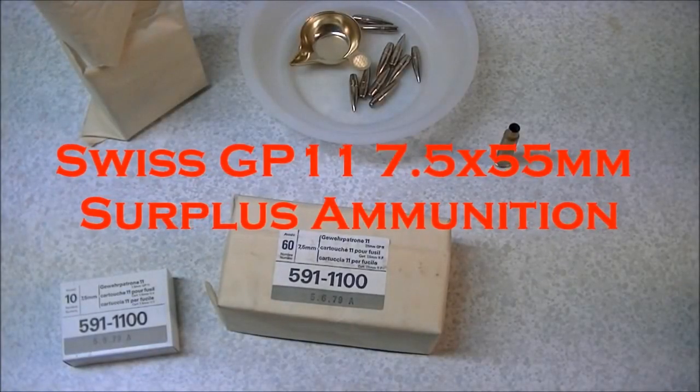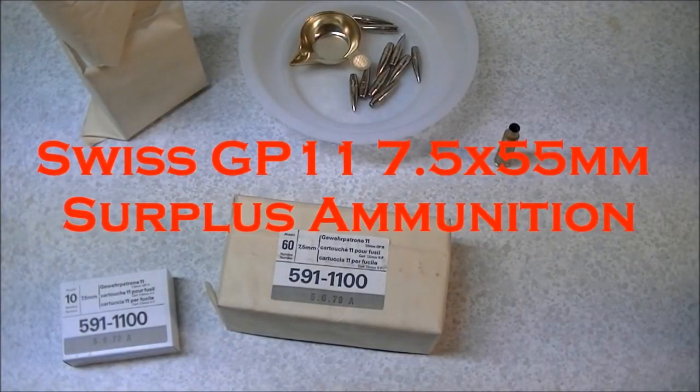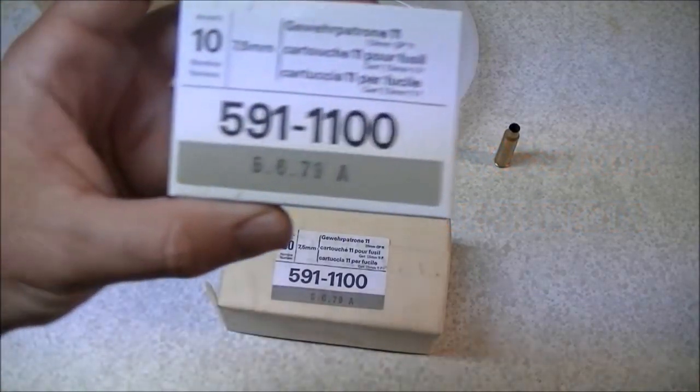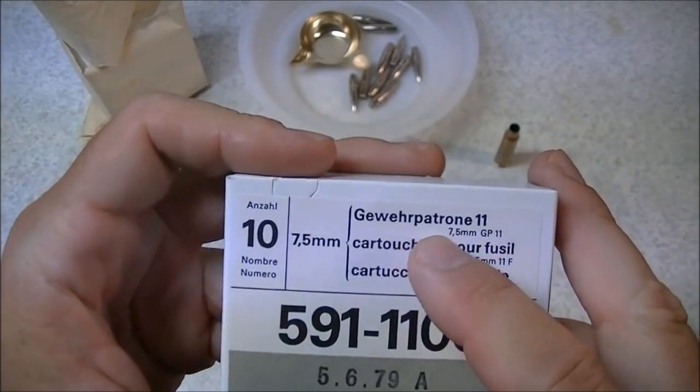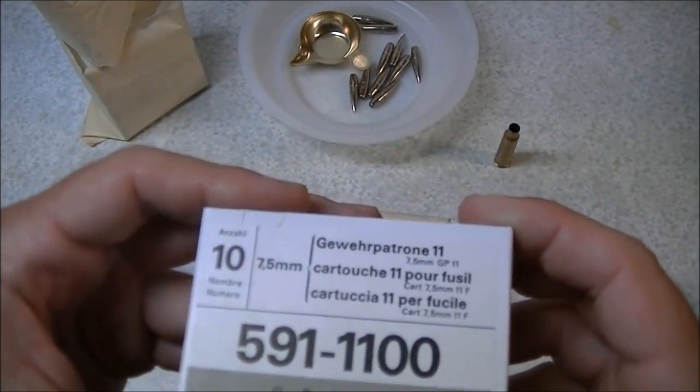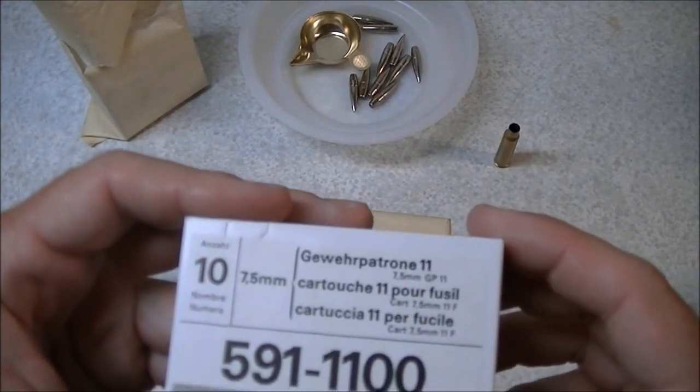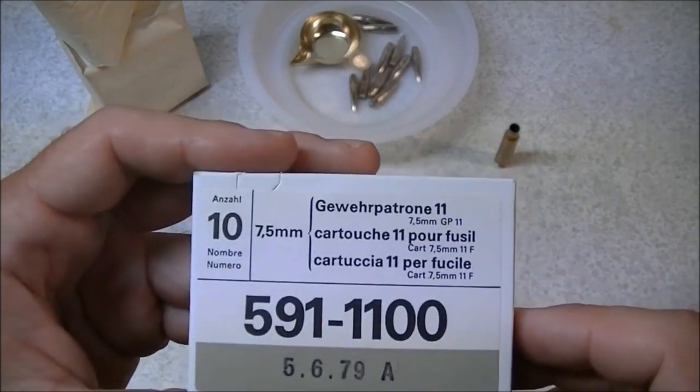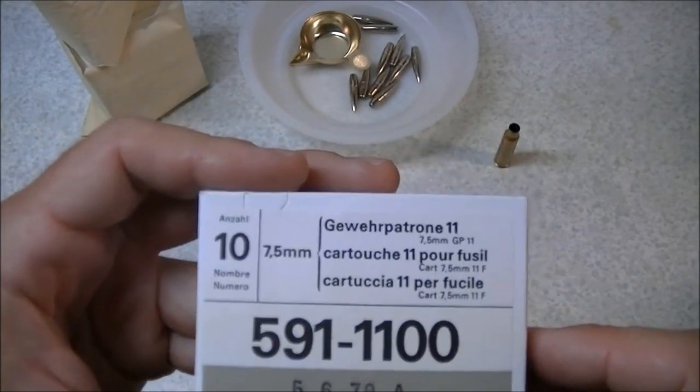Hi there guys. In this video I'd like to talk a little bit about the Swiss GP-11 cartridge. You can see the box here labeled as Gewehr Patron 11, which I believe would be basically rifle cartridge pattern 1911. It's also in French and Italian as well since Switzerland is a trilingual country.